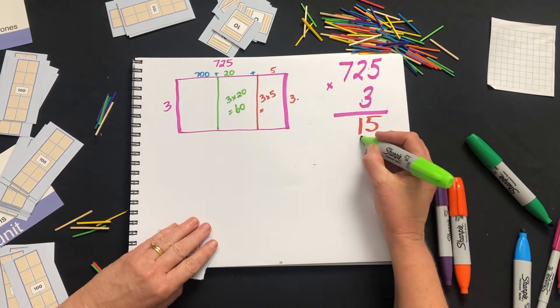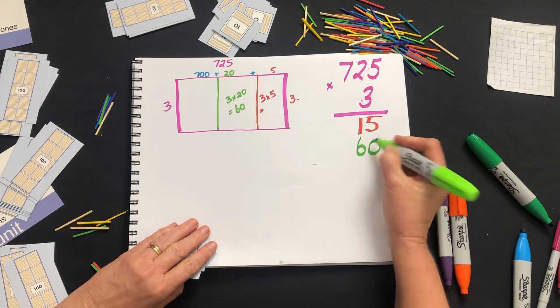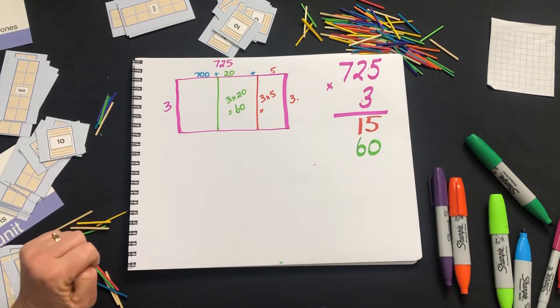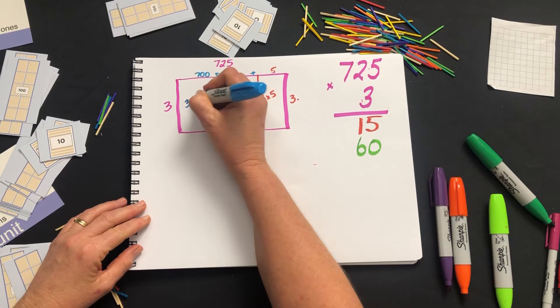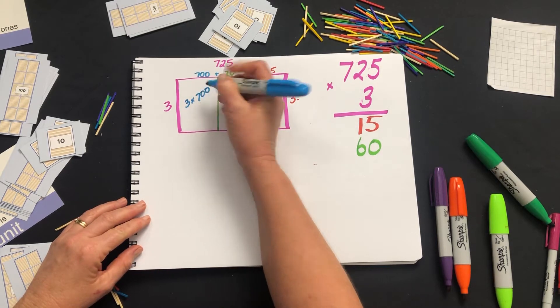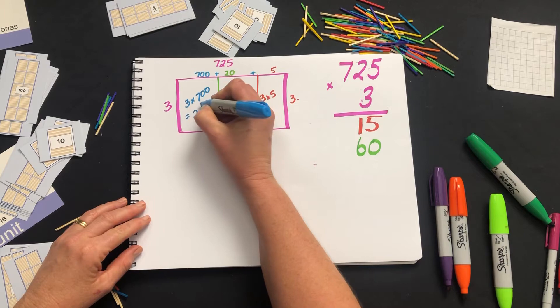So we can write down our 60. And finally, our 3 times 700 is going to be 2100.